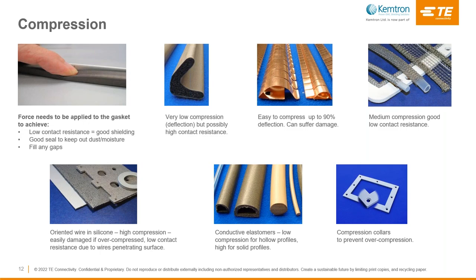Different types of EMI gasket require different levels of closure force. For cabinet doors requiring several metres of gasket strip, a very low compression force gasket will be required unless the cabinet is of robust construction and the door is hydraulically operated. Conductive fabric-over-foam lip seals offer the lowest compression force. Beryllium copper fingers can also be very easy to compress but can suffer damage through snagging and broken fingers. Sponge or hollow tube type gaskets such as knitted wire over a rubber core offer medium forces. Solid silicone rubber seals loaded with conductive particles or wires will be the hardest to compress but also offer a good dust and moisture seal.